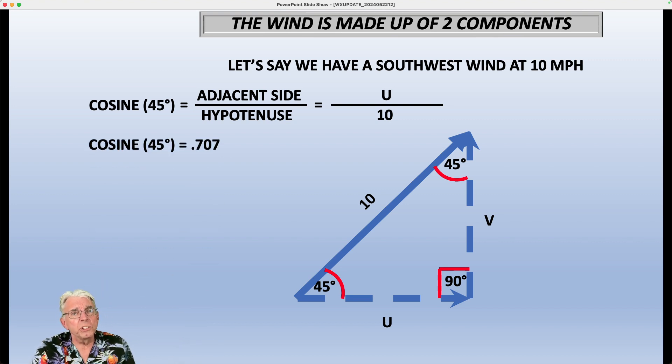Now, we know the cosine of 45 degrees is 0.707. You can use your trusty calculator or whatever to get that. And so if you multiply both sides of the equation by 10, you get the U component is 10 times 0.707 or 7.07 miles per hour. So that is the U component of the wind, the part of that southwest wind at 10, the west to east component.